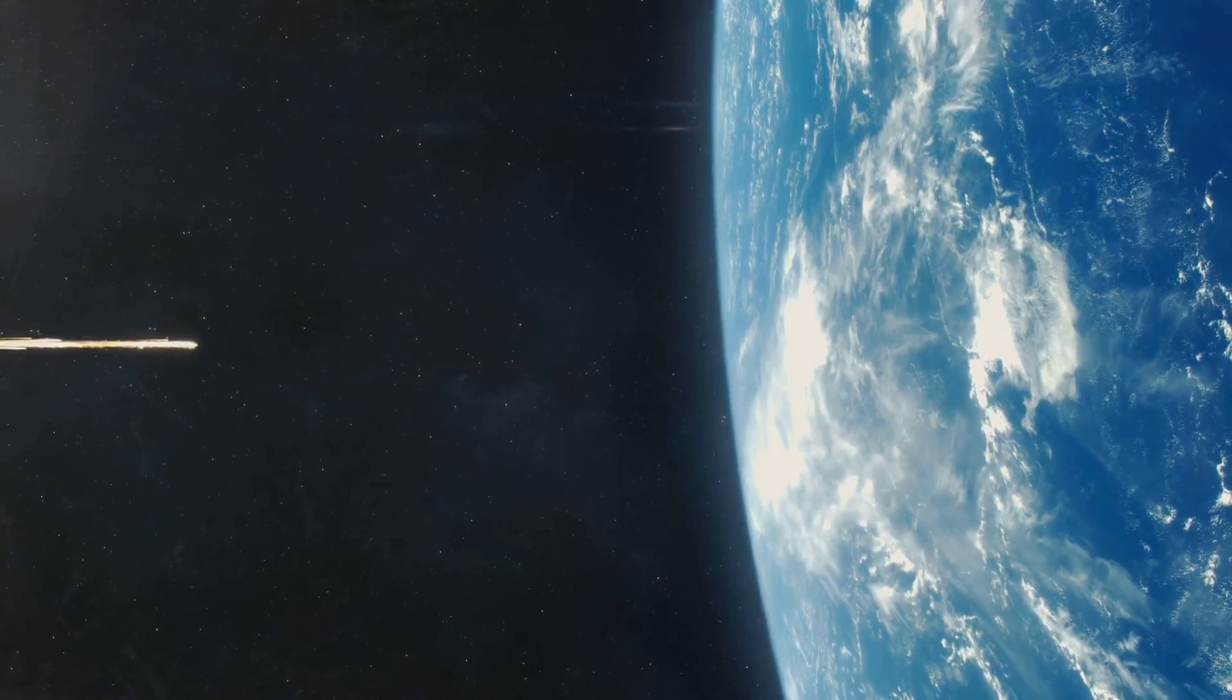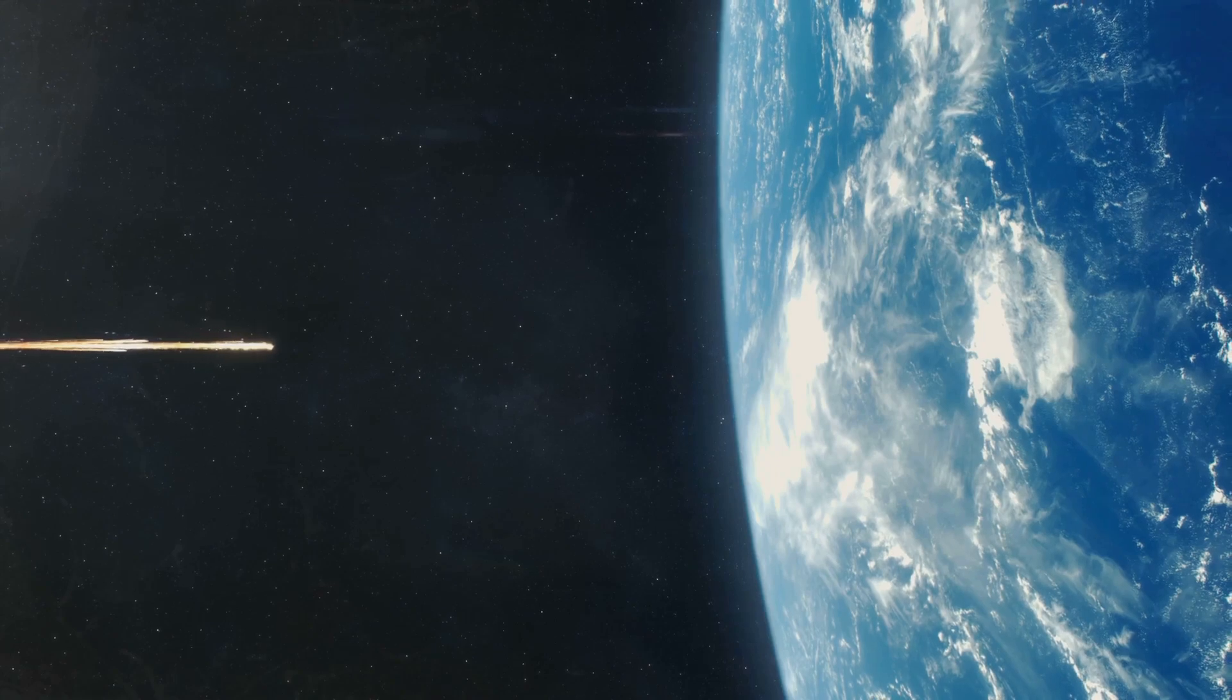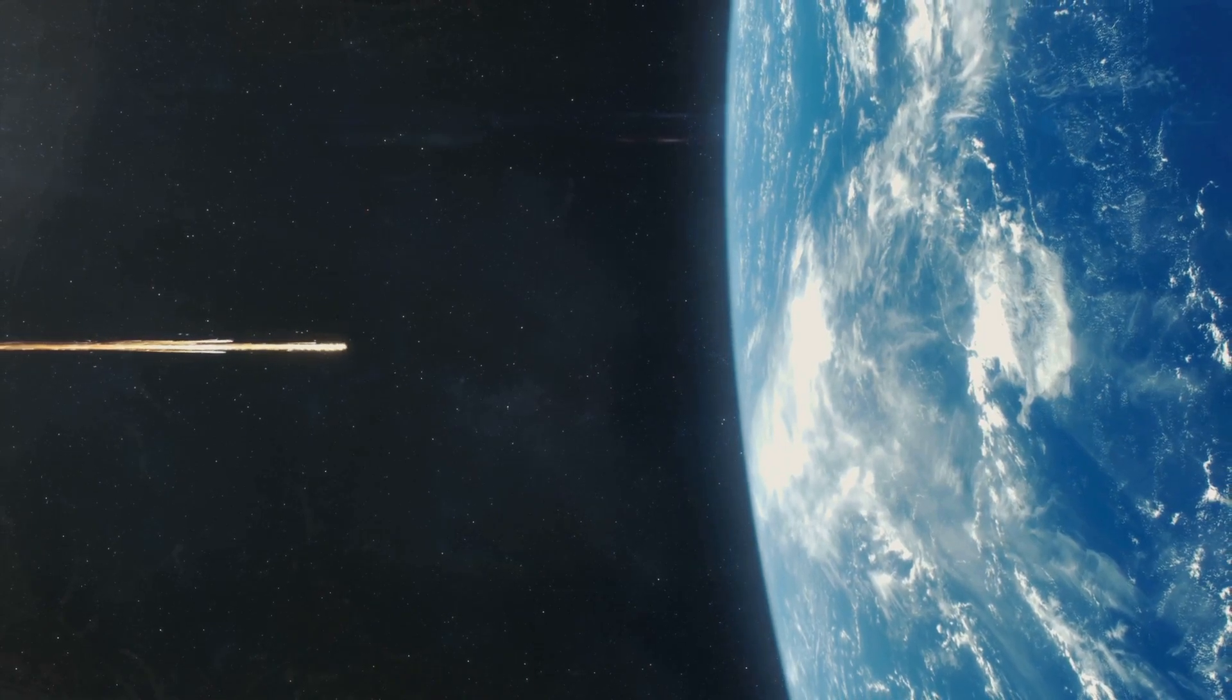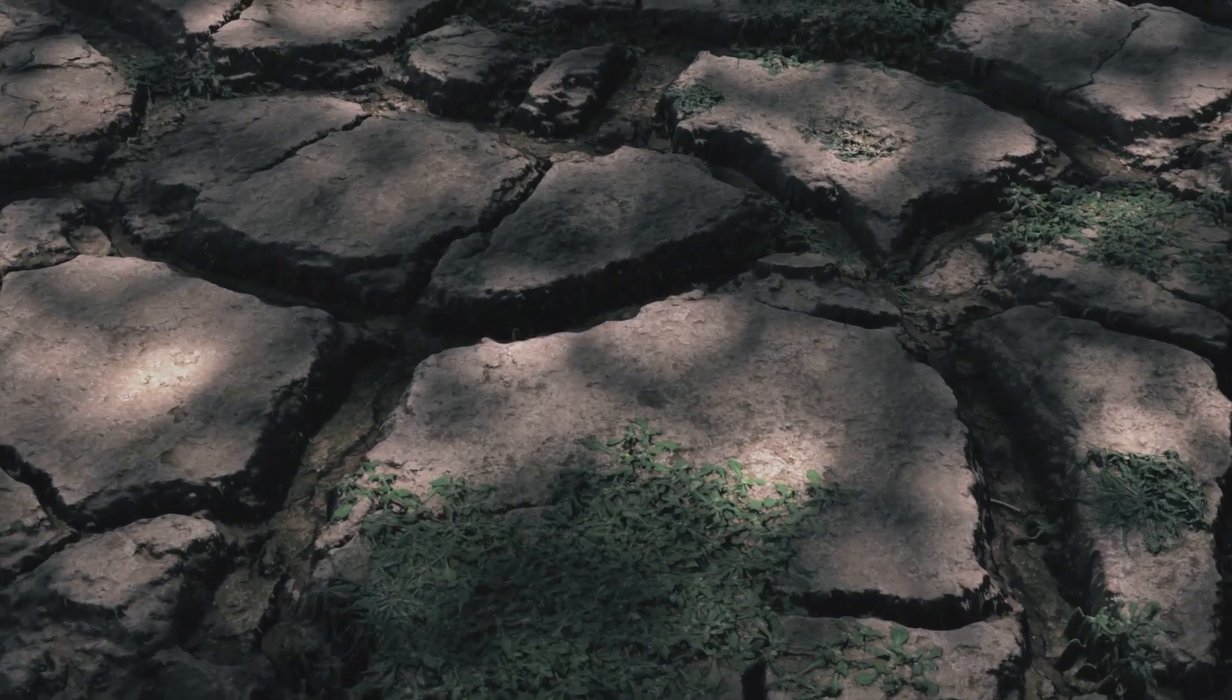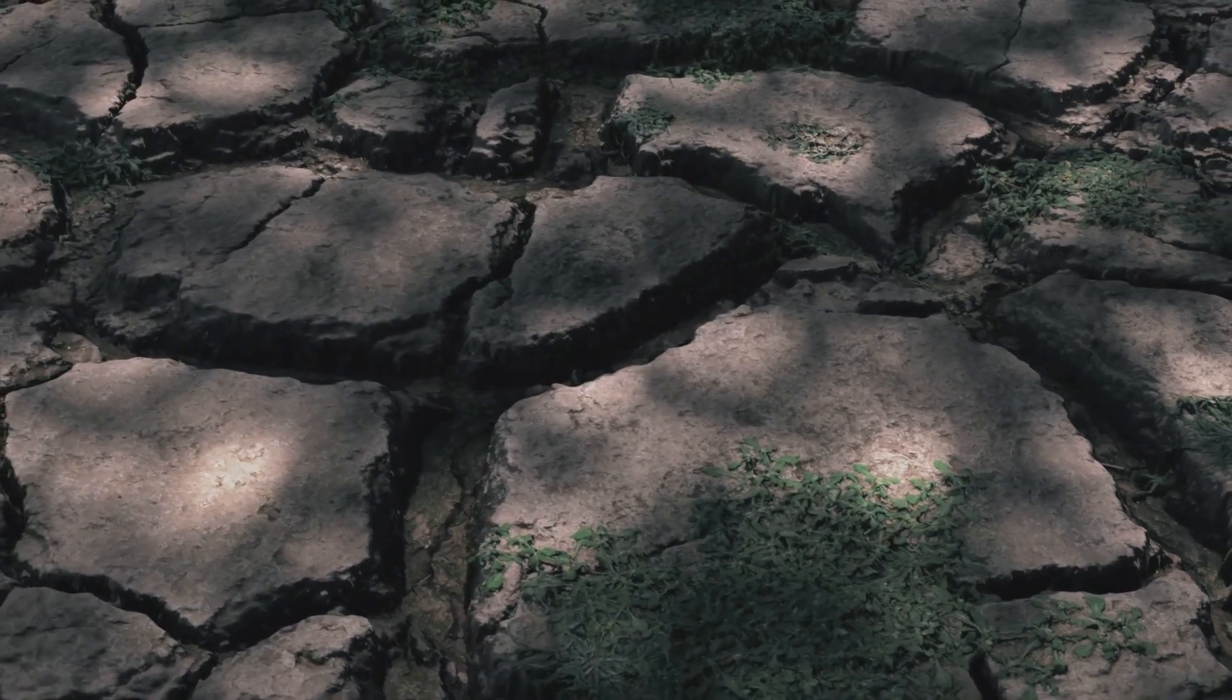Sunlight, the life-giving force, would be blocked out. Imagine our planet shrouded in darkness with temperatures plummeting rapidly. Without sunlight, the plant life we depend on would wither and die. This would trigger a domino effect up the food chain.